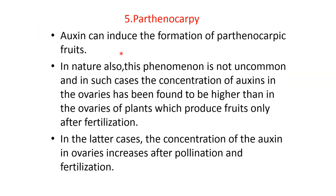Parthenocarpy: auxin can induce the formation of parthenocarpic fruit. In nature, this phenomenon is not uncommon. In such cases, the concentration of auxin in the ovary has been found to be higher than in ovaries of plants that produce fruits only after fertilization. In the latter case, the concentration of auxin in the ovaries increases after pollination and fertilization.